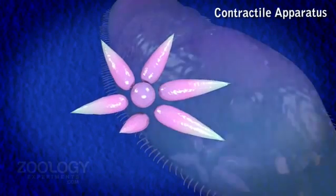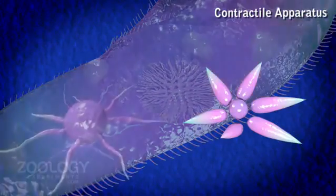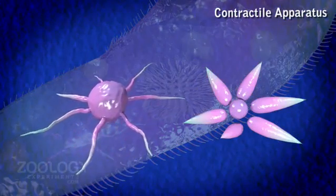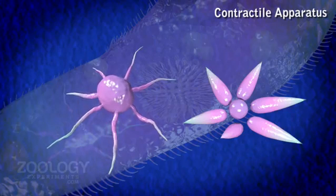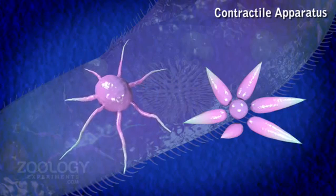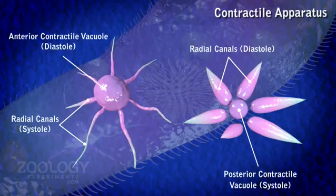Each of them is surrounded by a circlet of six to ten long narrow spindle-shaped radial canals. Each contractile vacuole opens outside through a permanent pore in pellicle of dorsal side of body.